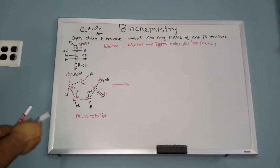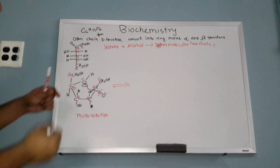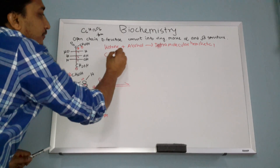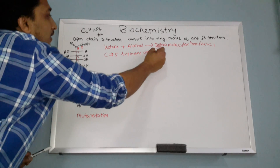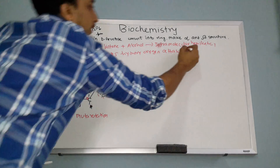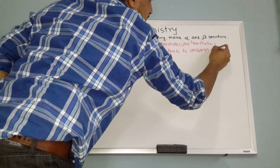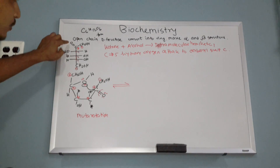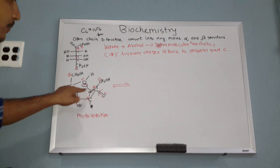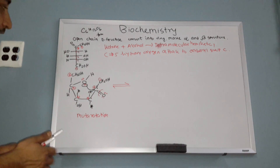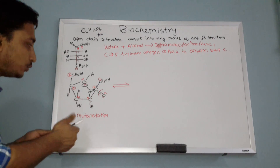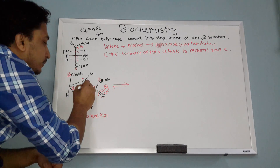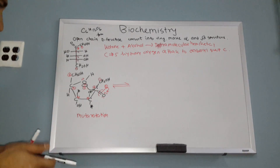Look at what happens: the two lone pairs of oxygen from carbon number five attack the carbonyl carbon. Carbon number five's hydroxyl oxygen attacks the carbonyl group carbon — that is carbon number two, which has the double bond to oxygen. When these two lone pairs attack carbon number two, this carbon gets too many bonds, so one bond must break.